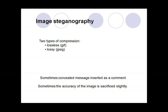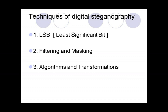By using image steganography there are two types of compression available: lossy compression and lossless compression. Lossless compression generally occurs in the .gif format, and lossy compression generally occurs in the JPEG format. In lossless compression there is no effect on the original image, while in lossy compression there is a loss of the original data.